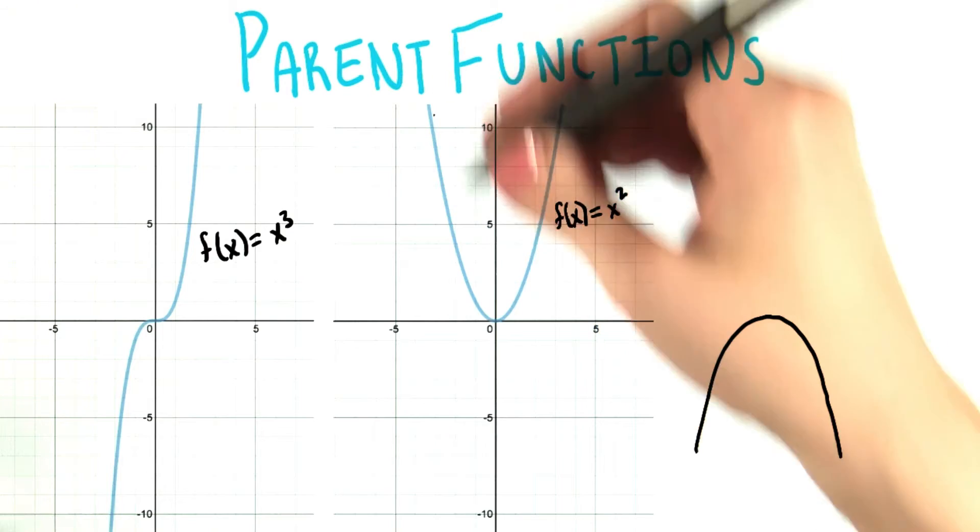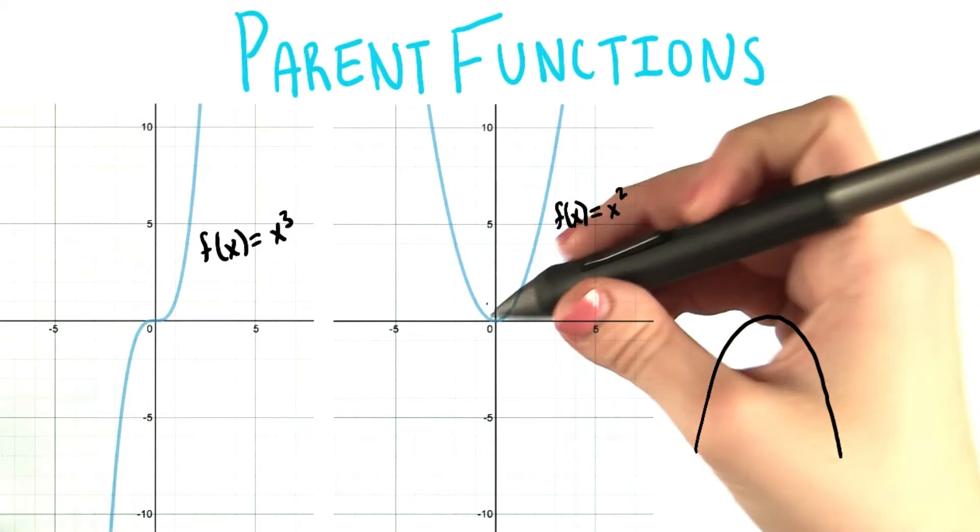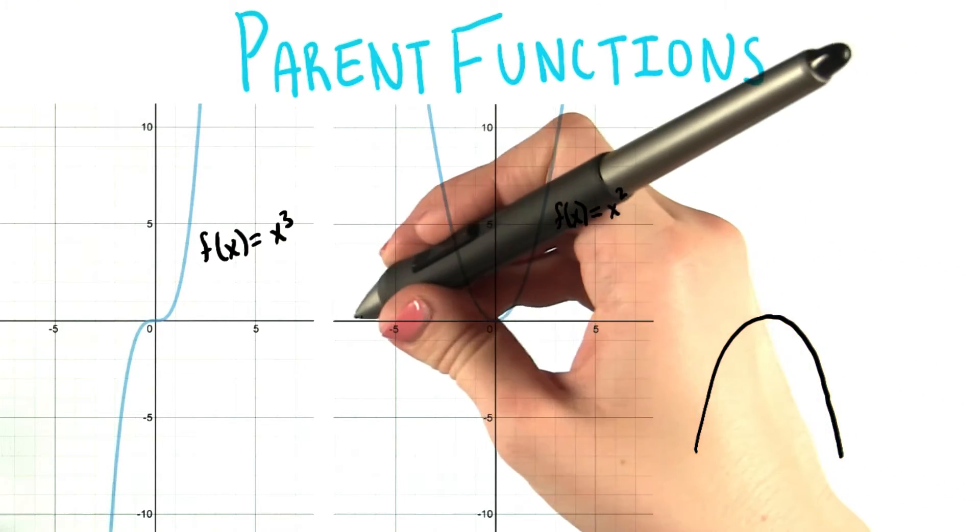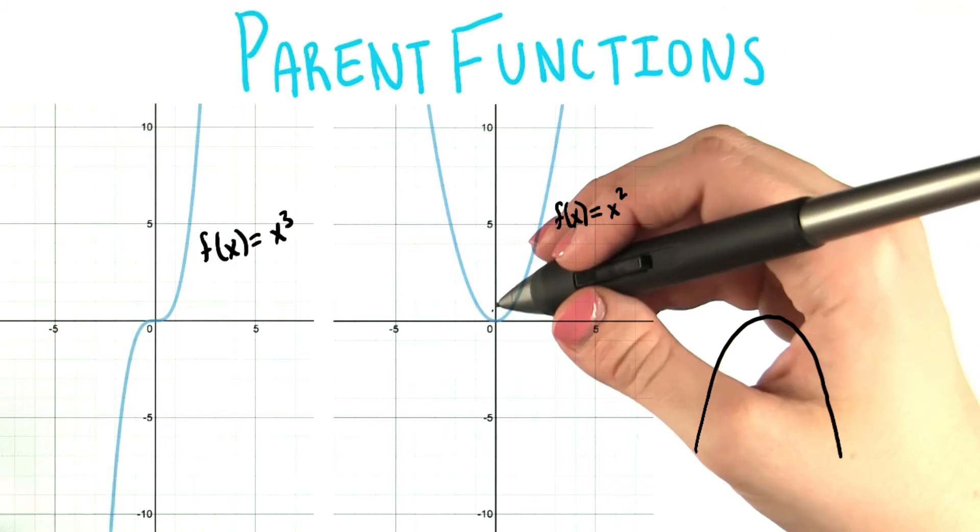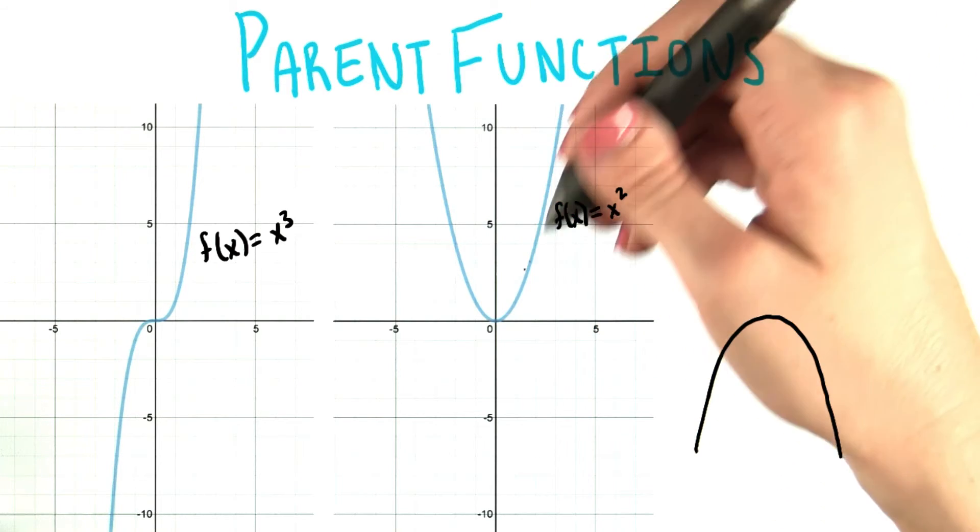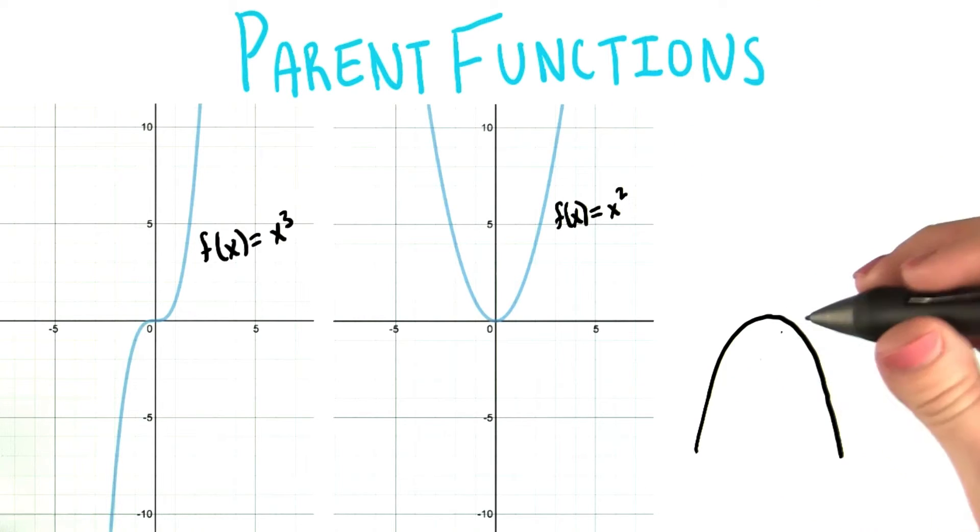And then both of its ends point in the same direction. And as x gets further away, in either the negative direction or the positive direction, the graph points the same way. Either both ends of it go to positive infinity or both ends go to negative infinity.